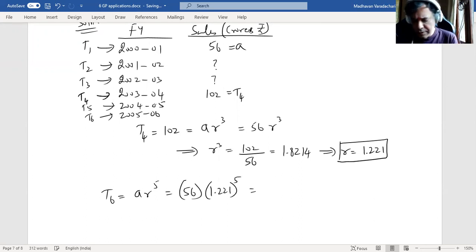1.221 to the power of 5, let us calculate that. This gives us 152.13 crores. That will be the solution for this particular question.